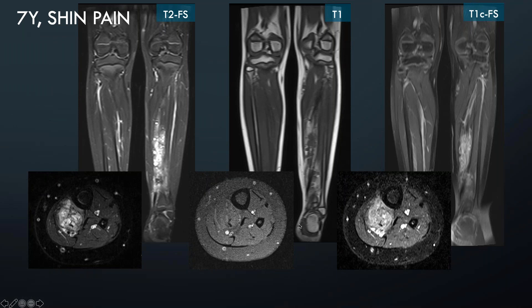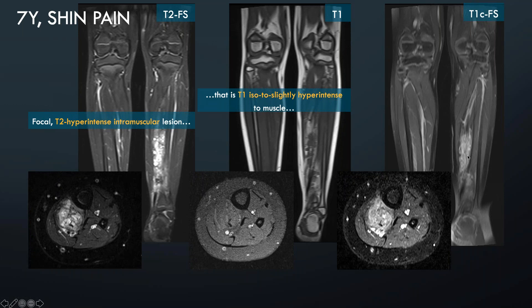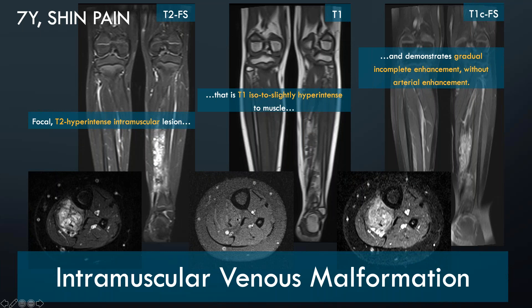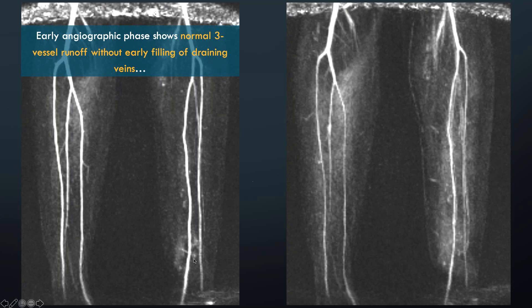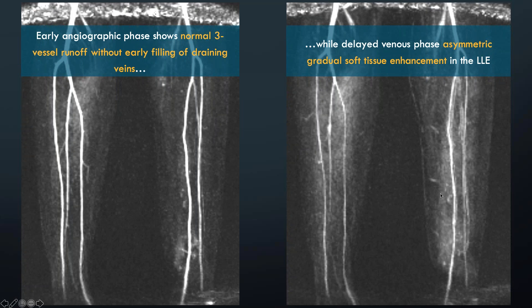Continuing in a similar vein — there is a T2 fat-saturated sequence with cystic channels that on T1 appear similar to the signal of adjacent muscle. There is some fat interspersed within the lesion and within the muscle itself, displaying avid contrast enhancement after gadolinium. Notice there is no arterial enhancement here — this is another venous malformation, this one within the muscle. On time-resolved MIP sequences, early angiographic phase shows normal three-vessel runoff, but with delay there is more soft tissue enhancement in the left lower extremity, consistent with an intramuscular venous malformation.